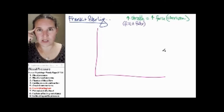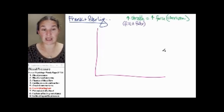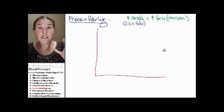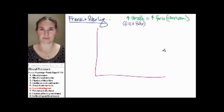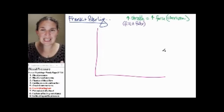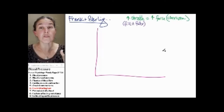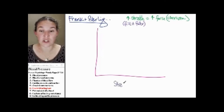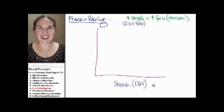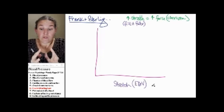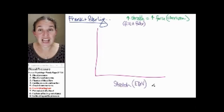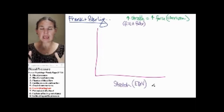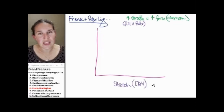What concept would allow us to quantify a fuller heart? Stretch can be quantified by end diastolic volume. Remember end diastolic volume? It's the volume of blood in the ventricle at the end of diastole — right before systole, right before contraction happens. The more blood you push in, the greater the end diastolic volume.